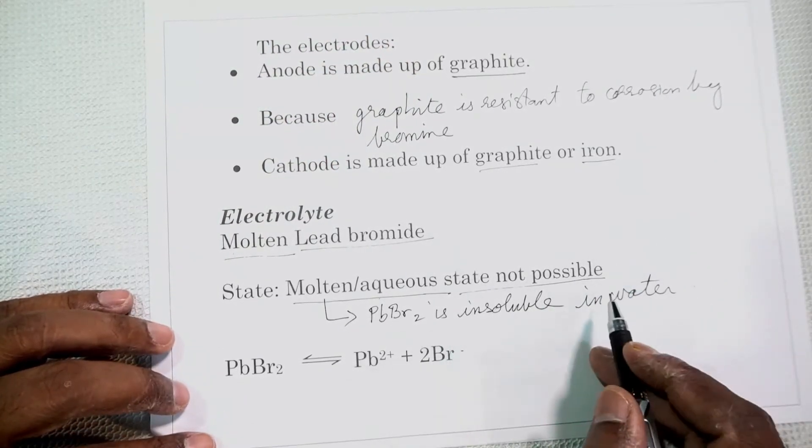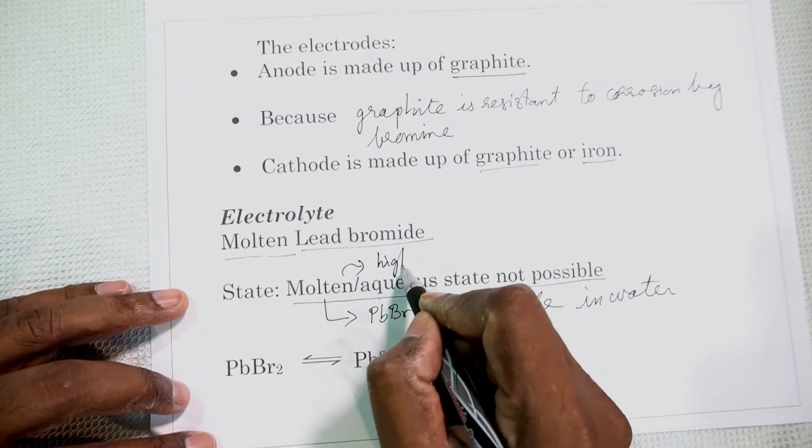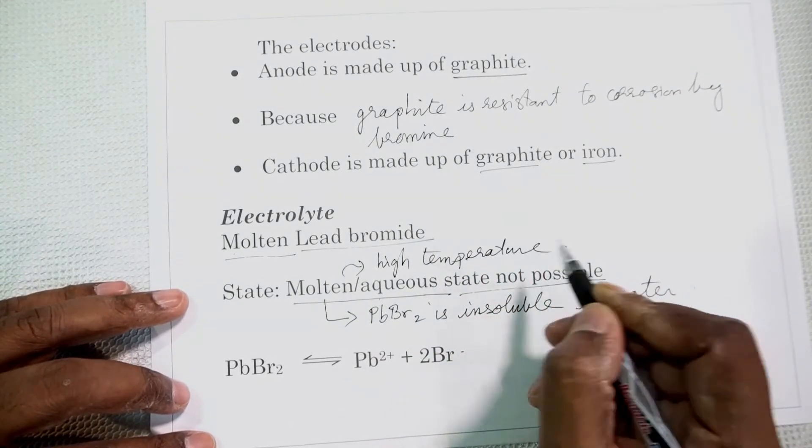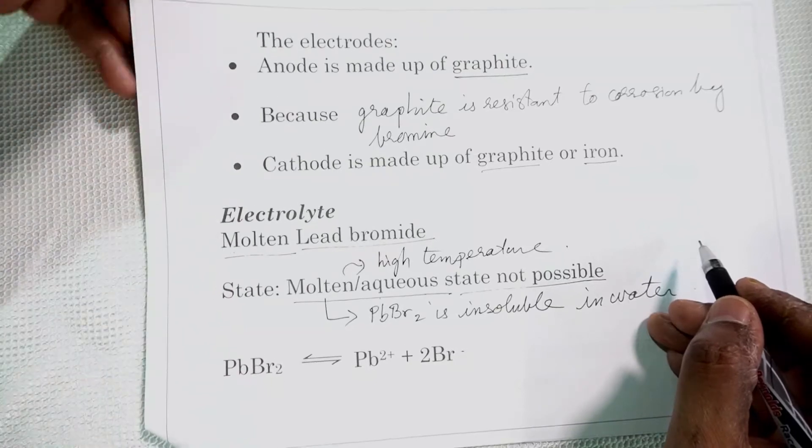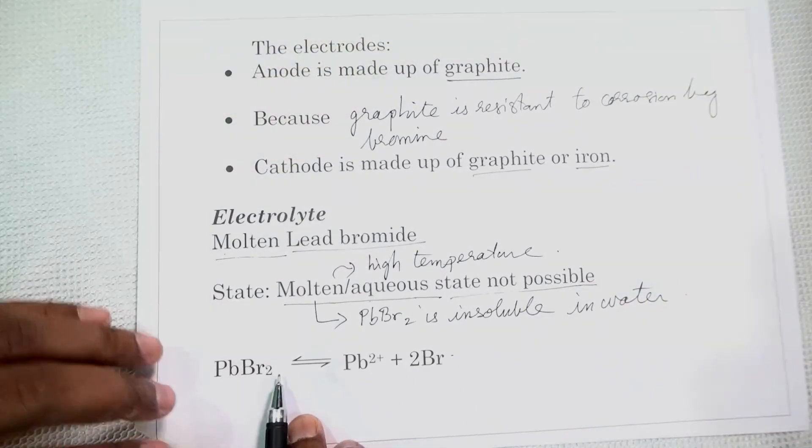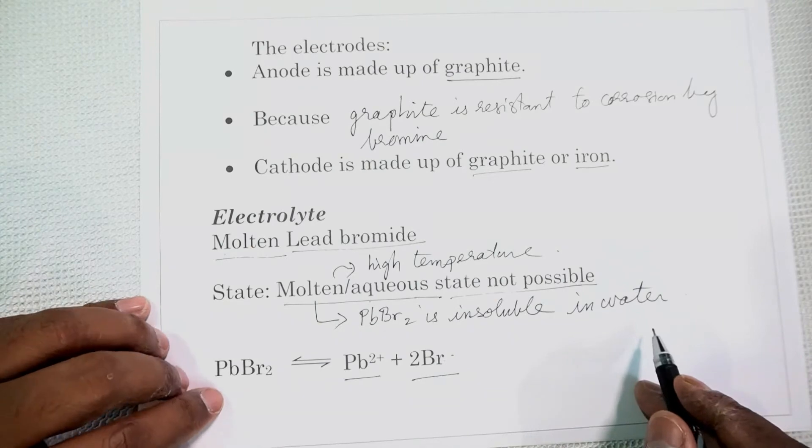Now molten state, because it is an electrovalent compound, it requires high temperatures. It has a high melting point. That is why silica crucible is used because of high temperature and also due to corrosion. So the lead bromide dissociates to give lead ions and bromide ions. Br minus ions are produced. So this is the electrolyte.